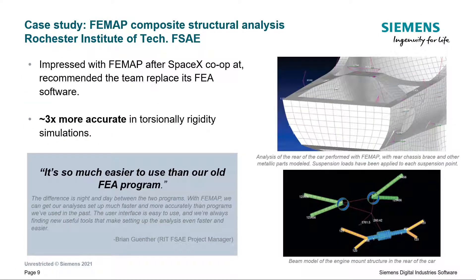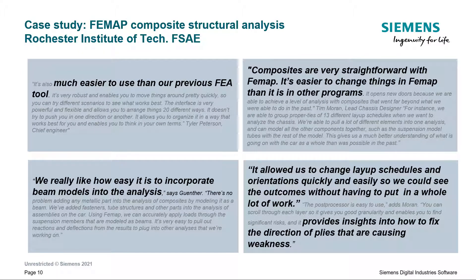For example, the RIT FSAE team moved to Femap after the chief engineer completed a co-op with SpaceX. They performed analysis of the entire chassis, a chassis brace, steering support, engine mounts, intake plenum, wings, undertray, drive shafts, and steering shafts, and ultimately found Femap to be three times more accurate for their monocoque torsional rigidity simulations and a lot easier to use. Here are quotes that elaborate on the ease of use, capability, and benefits they saw from using Femap.